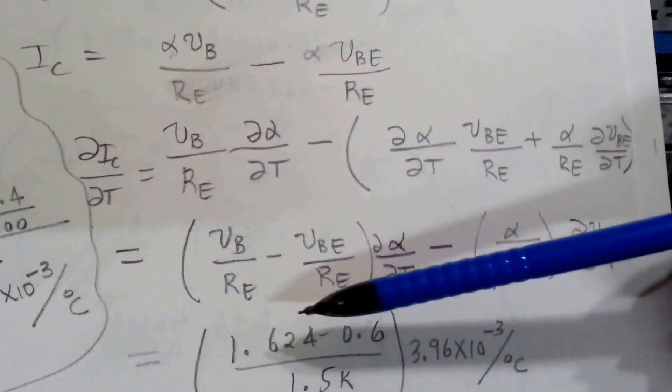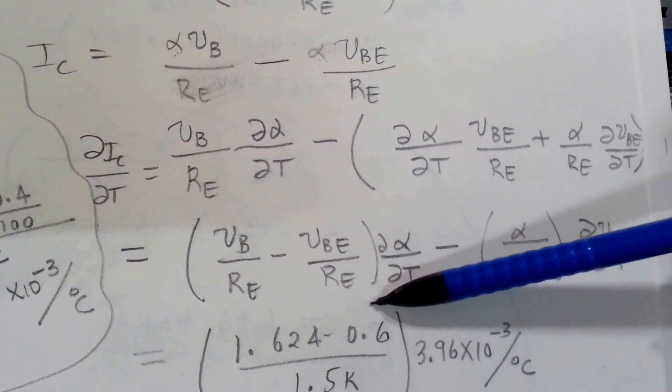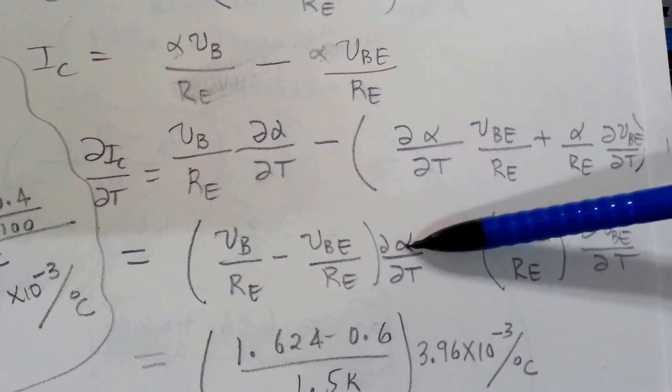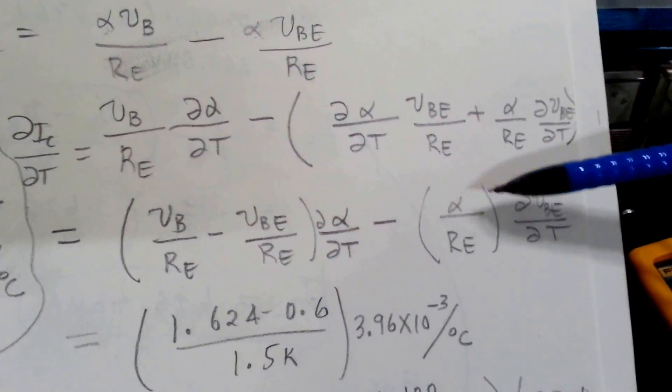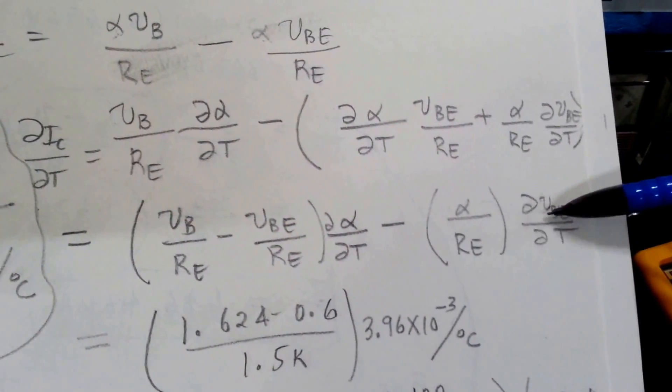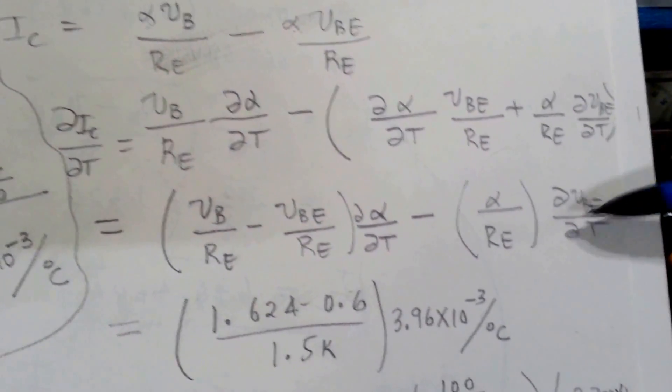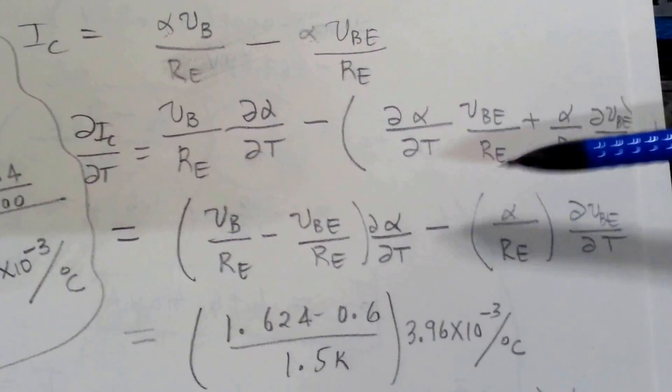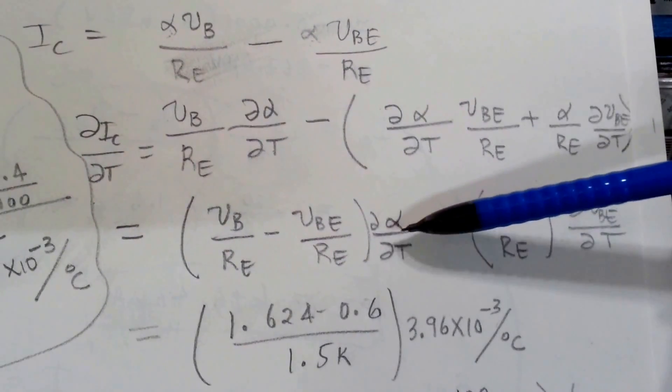And if we manipulate this a little more, it becomes VB divided by RE minus VBE divided by RE, which is our original expression, but with the partial differential of alpha with respect to temperature, and minus this expression, which is the effects of temperature on VBE as well. And in order to plug, we know these values. In order to plug these values, we have to calculate this term here, the partial differential of alpha with respect to temperature.